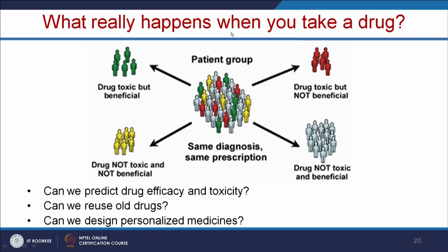Let us see what really happens when you take a drug. In a patient group with the same diagnosis and same prescription, you can see different kinds of effects. For a particular group, the drug may be toxic but beneficial; for another group, the drug is toxic and not beneficial; and for another group, it is not toxic and is beneficial. We have to study the effect of the drug on different patient groups before taking it for commercial application, and we must consider whether we can design personalized medicine for a particular patient's need.